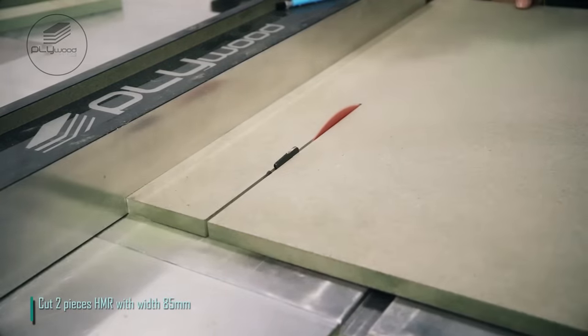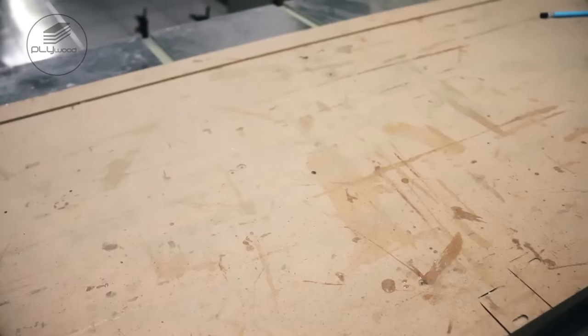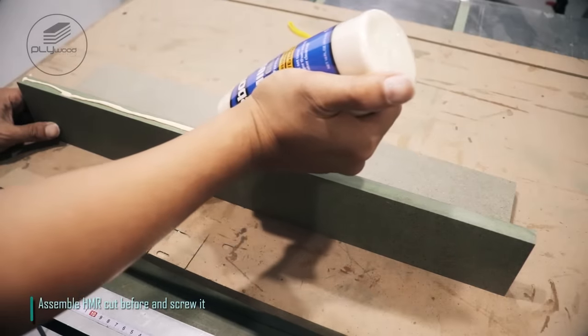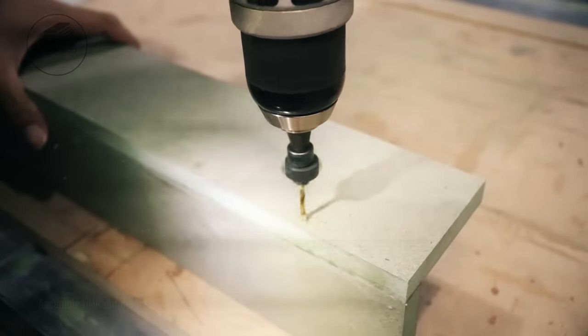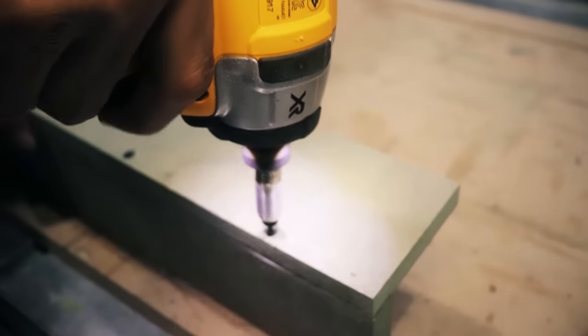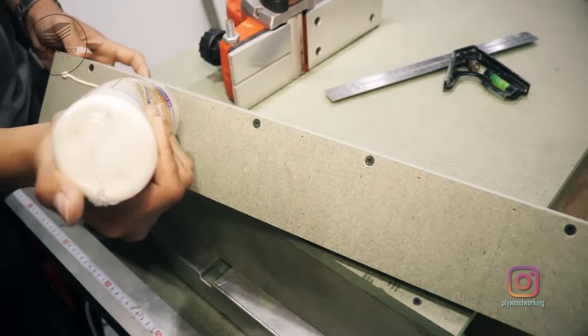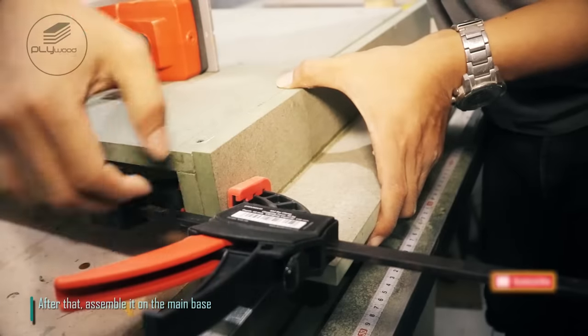Cut two pieces HMR with width 85 mm. Assemble HMR cut before and screw it. After that, assemble it on the main base.